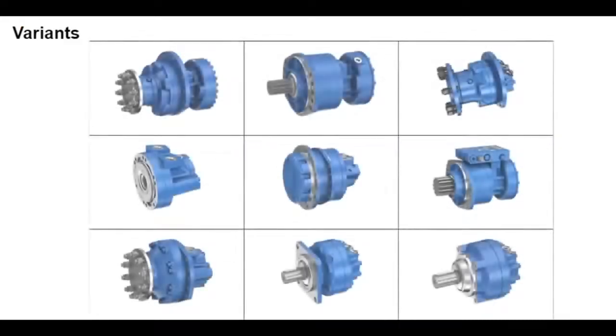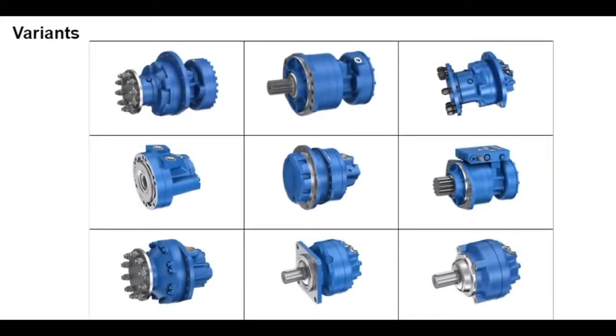MCR radial piston motors come in different models that differ primarily in the mounting flange or housing. These allow a wide variety of radial piston motors to be produced easily, which can then be used for special applications.